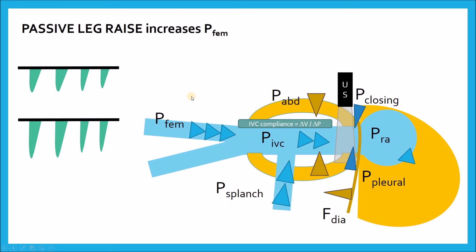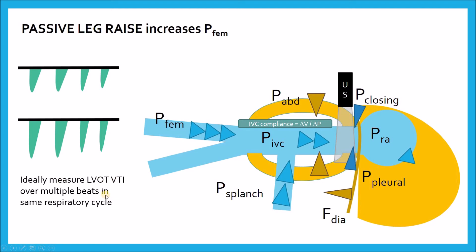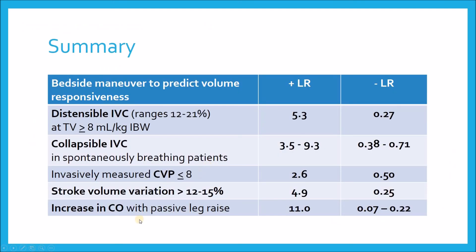When doing a passive leg raise, let's revisit the physiology. We are simply increasing femoral venous pressure, giving a better pressure head to improve venous return. All other variables are constantly changing in our critically ill patients, but if we're measuring LVOT VTI over multiple beats over an entire respiratory cycle, those things work themselves out. The only variable we've really changed is femoral venous pressure. Splanchnic venous pressure, pleural pressure, and abdominal pressure all change throughout the respiratory cycle, but by averaging LVOT VTI over multiple beats we can see if cardiac output changes with a passive leg raise — with only the femoral venous pressure having been manipulated.